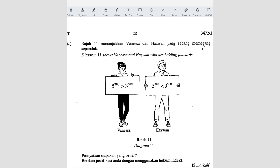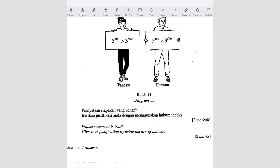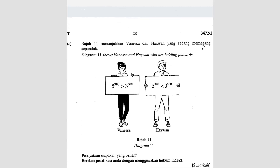Part c: Diagram 11 shows Vanessa and Hassan holding play cards. The question asks whose statement is true, and you must justify using the laws of indices. Since the bases are 5 and 3, we cannot make them the same, but we can make the indices the same.